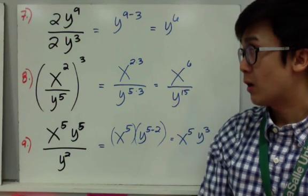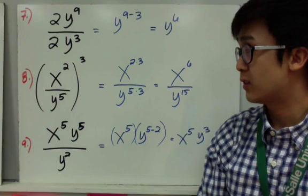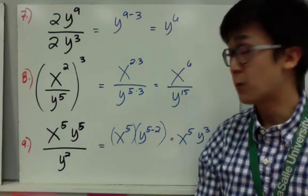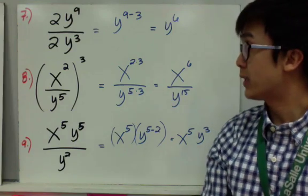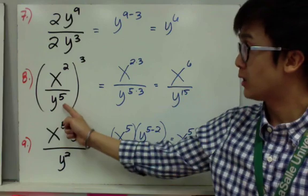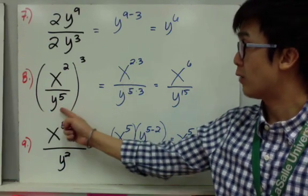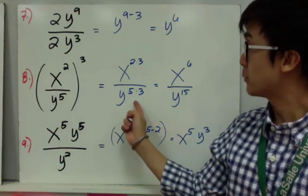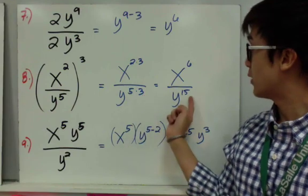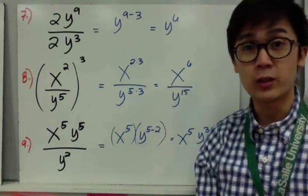For number 8, we are using two laws: the division law and the power raised to a power law. We distribute the exponent 3 to both the numerator and denominator, giving x raised to 2 times 3 over y raised to 5 times 3. Simplifying: 2 times 3 is 6 and 5 times 3 is 15, so the simplest form is x to the sixth over y to the fifteenth.